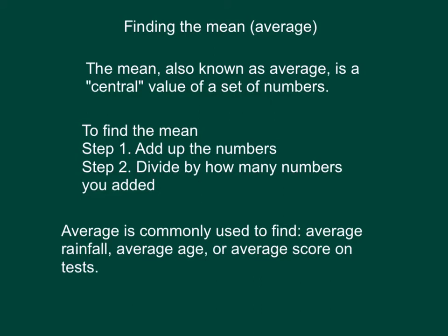To find the mean, there are two steps. Step 1: add up the numbers. Step 2: divide by how many numbers you added.